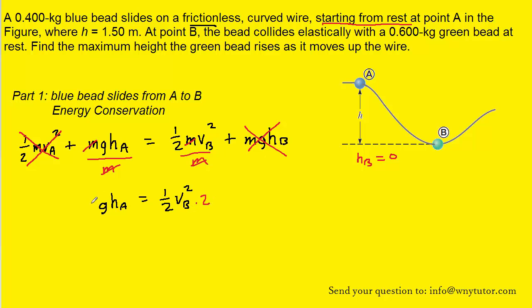We'll then multiply both sides by two. We can take the square root, and this will help us isolate the VB term. We can now plug in the known value of g, and also the height of the bead at position A, which was stated in the question as being 1.5 meters.